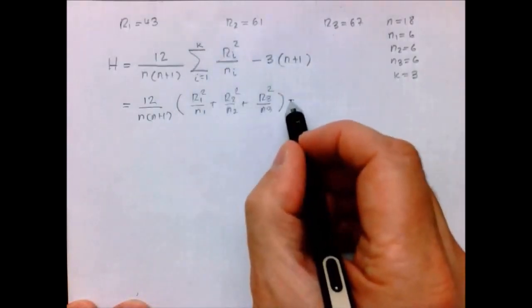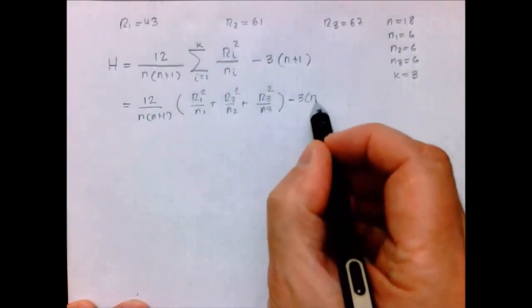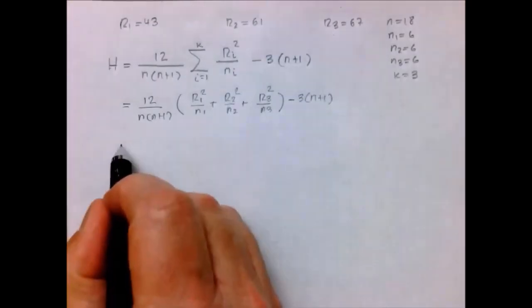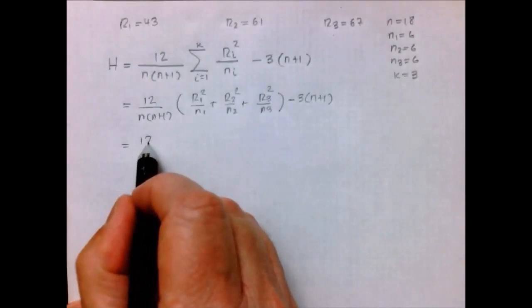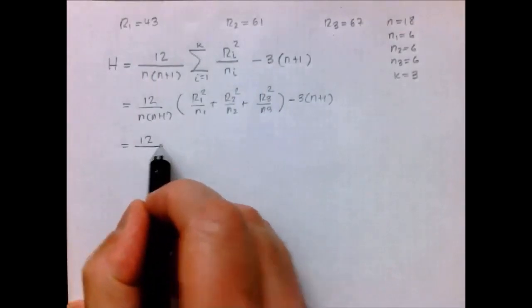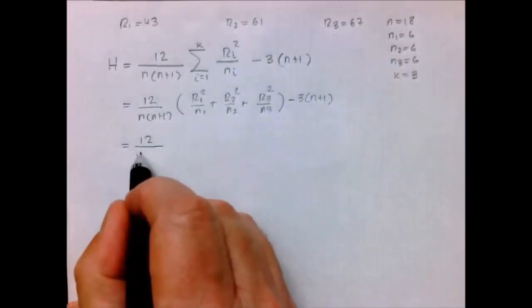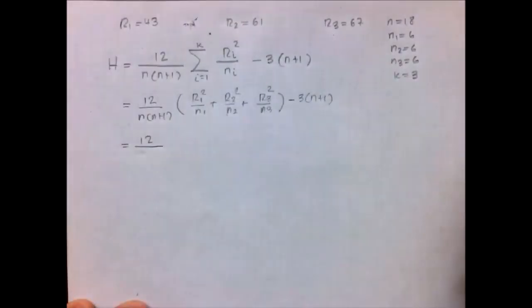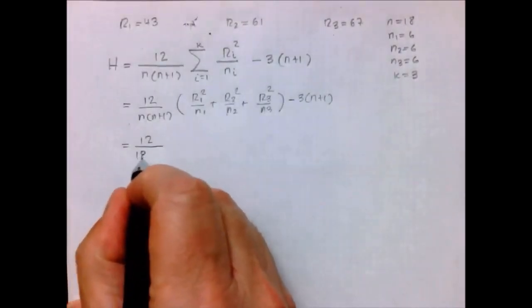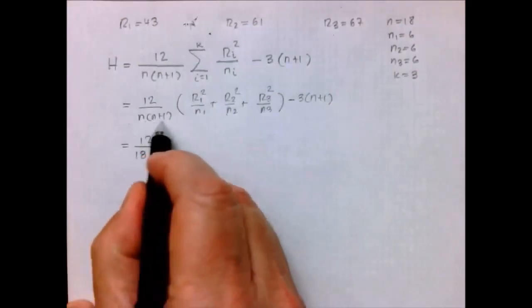Minus 3 times N plus 1. So all we have to do is plug these values in, which is going to be 12 divided by 18 times 18 plus 1, which is 19.